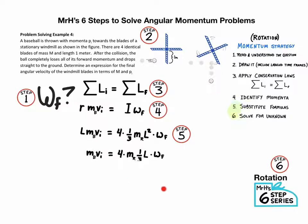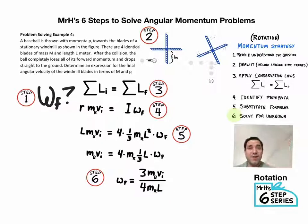And then we just do some algebra and we get three-fourths mass of the baseball, initial velocity of the baseball, divided by mass of each rod, length of each rod. As always, thank you for watching and good luck.